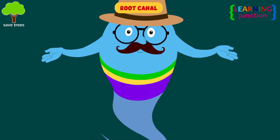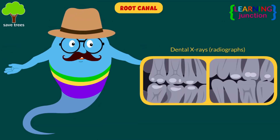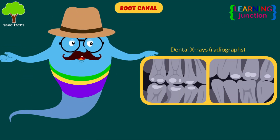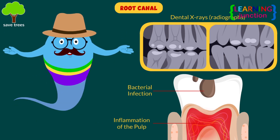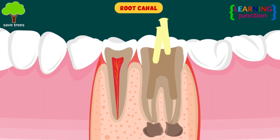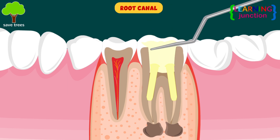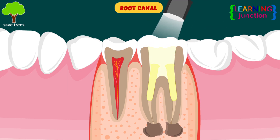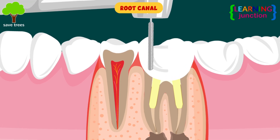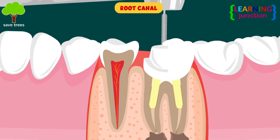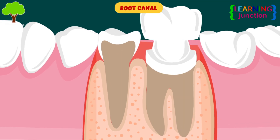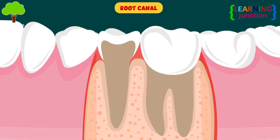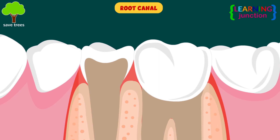Root canal. This treatment is needed when dental x-rays show that the pulp has been damaged by a bacterial infection. During the root canal process, the inflamed pulp is detached, the surfaces inside the tooth are then cleaned and disinfected, and a filling is placed to seal the space.